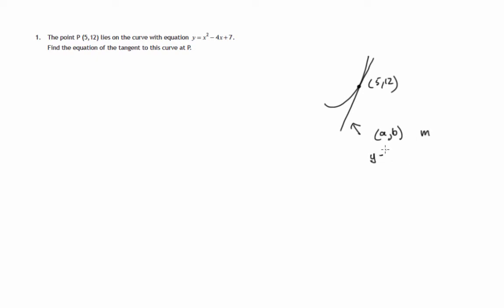And we know the equation will then be y minus b equals m(x minus a). So we do have the point a, b which is (5,12), but we don't yet have the gradient.